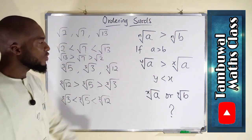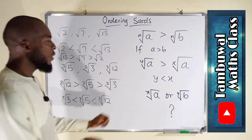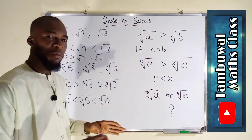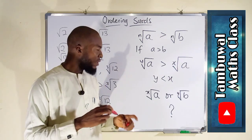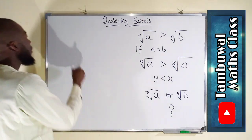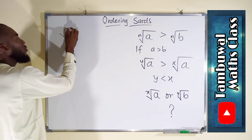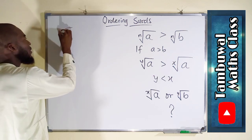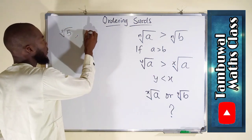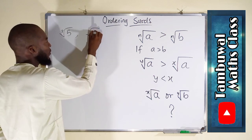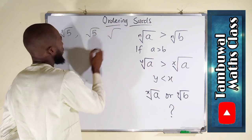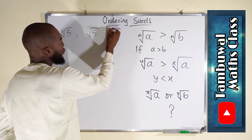Now let us consider the second condition — when you have the same radicands but entirely different degrees. We have cube root of 5, square root of 5, and the fourth root of 5.